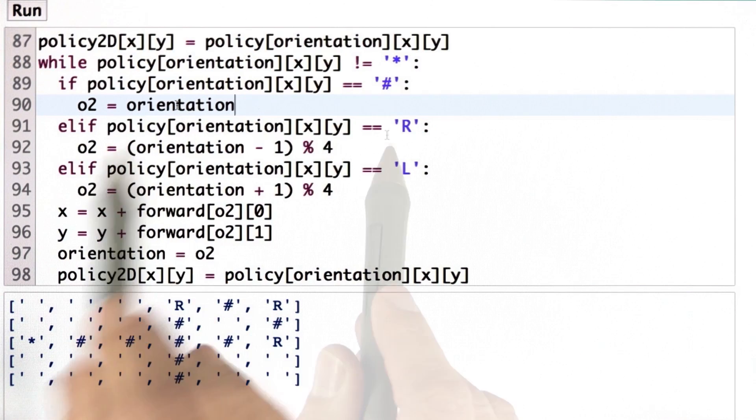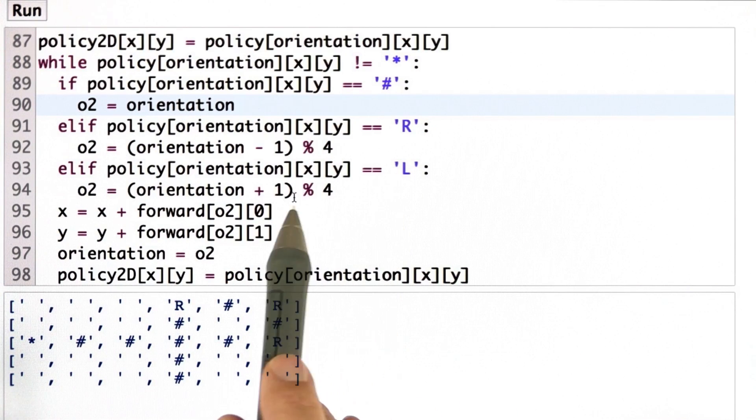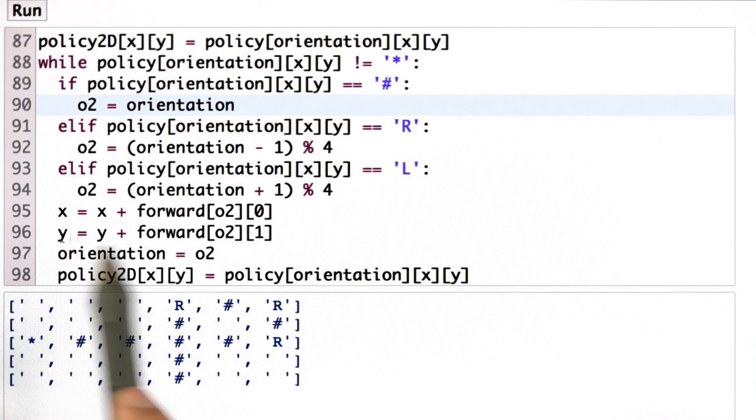If it's R, I turn to the right. If L, I turn to the left. I apply my forward motion, and I then update my new x and y coordinates to be the corresponding after the motion, and I update my orientation to be O2.